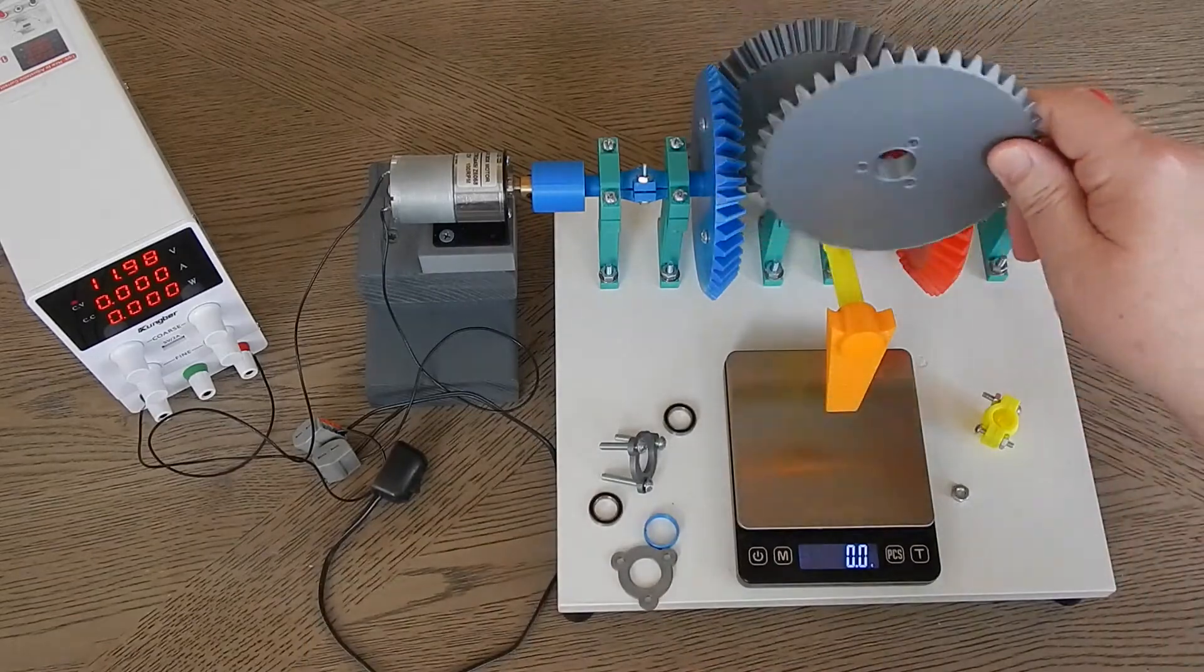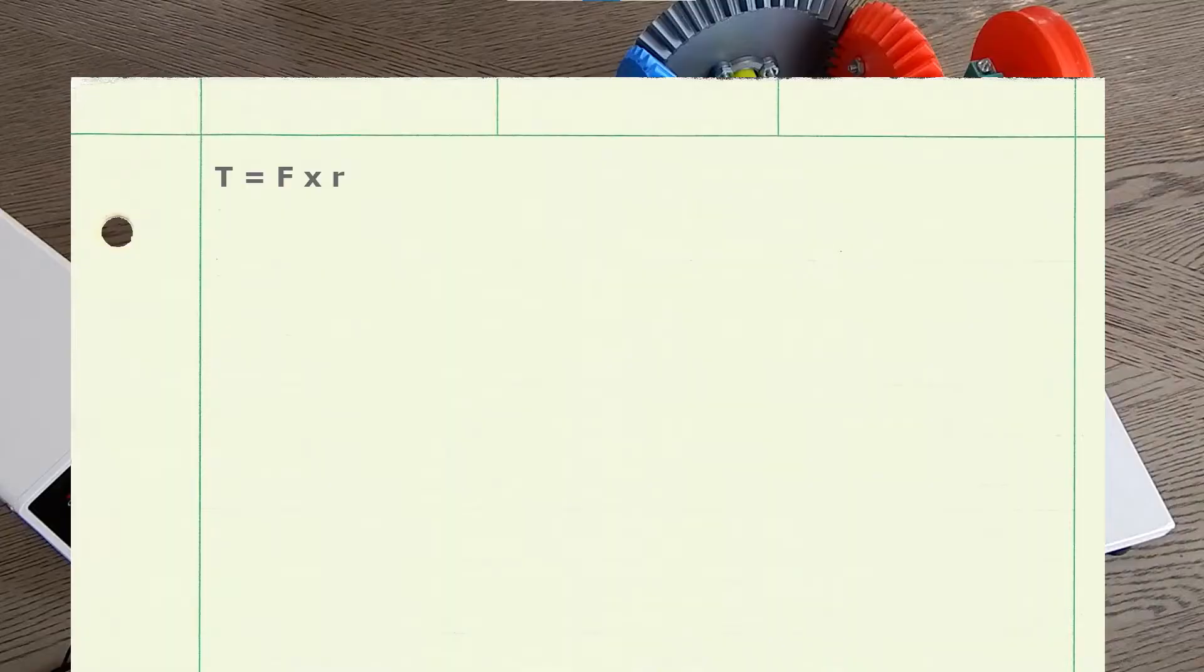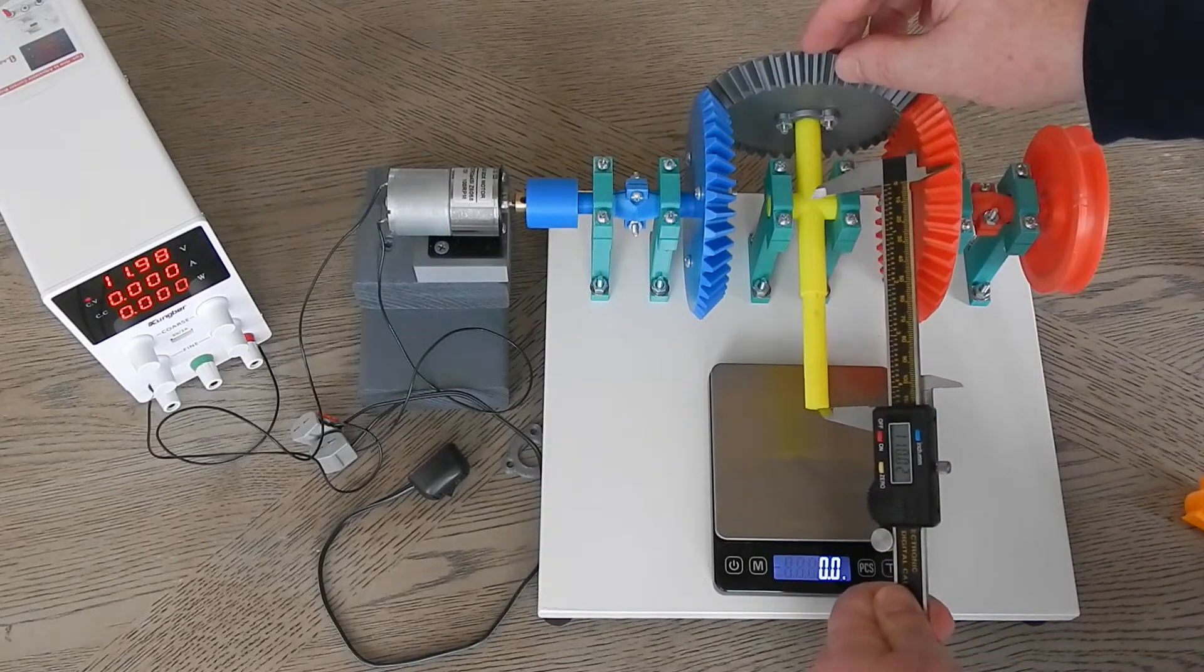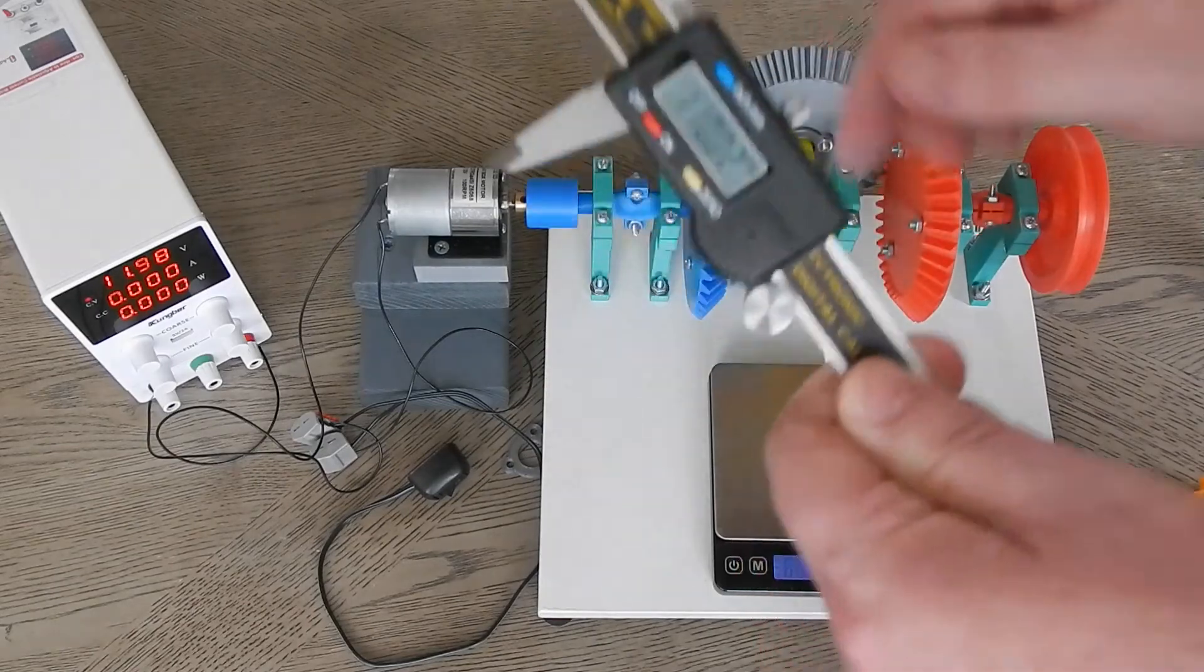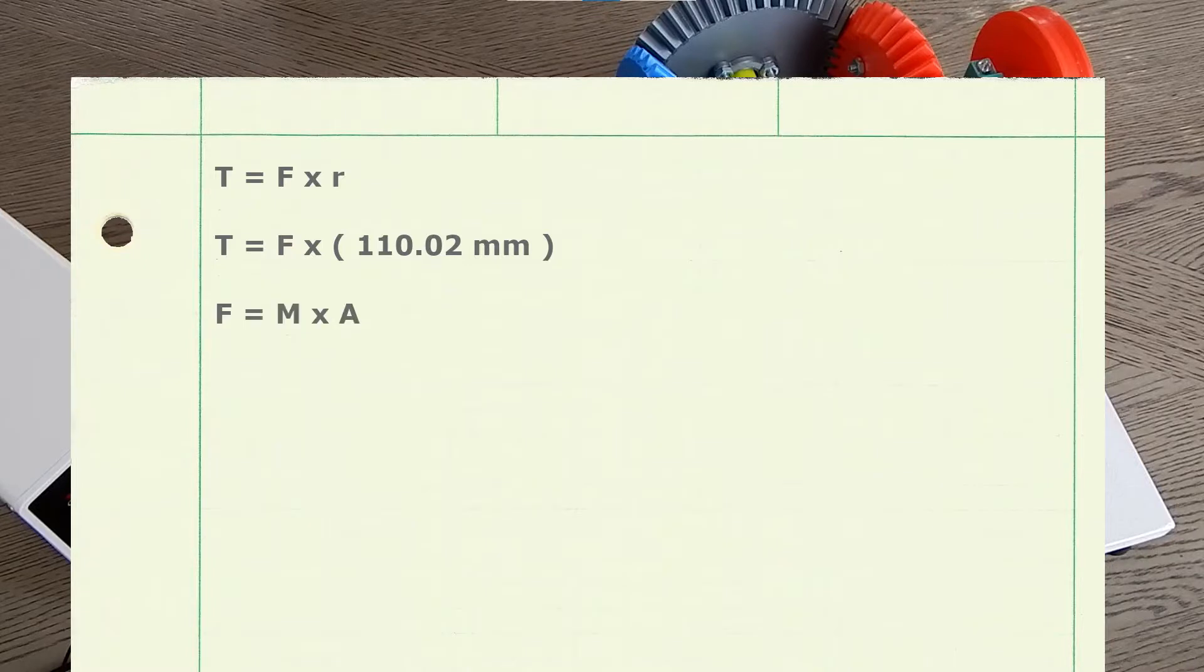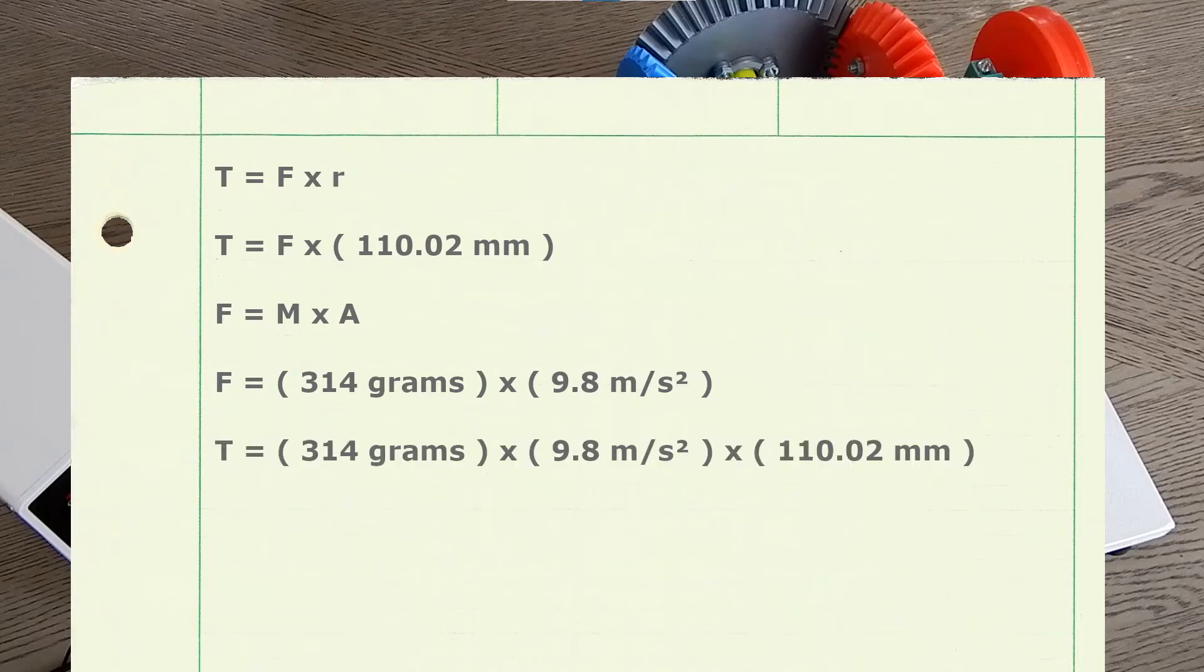Torque is force times the moment arm. The moment arm is this distance right here. Force would be the mass, let's say 314 grams, times the acceleration due to gravity, which is 9.8 meters per second squared, times the moment arm, 110.02 millimeters. That would be 0.339209 newton meters of torque, dynamic torque going through the system.